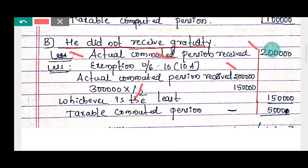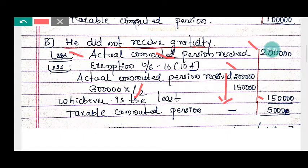Three lakh multiplied by one-half equals rupees one lakh fifty thousand. Now comparing: actual computed pension received is rupees two lakh, and half of full pension is rupees one lakh fifty thousand. Whichever is least will be allowed as exemption. The least is rupees one lakh fifty thousand, so exemption is rupees one lakh fifty thousand.